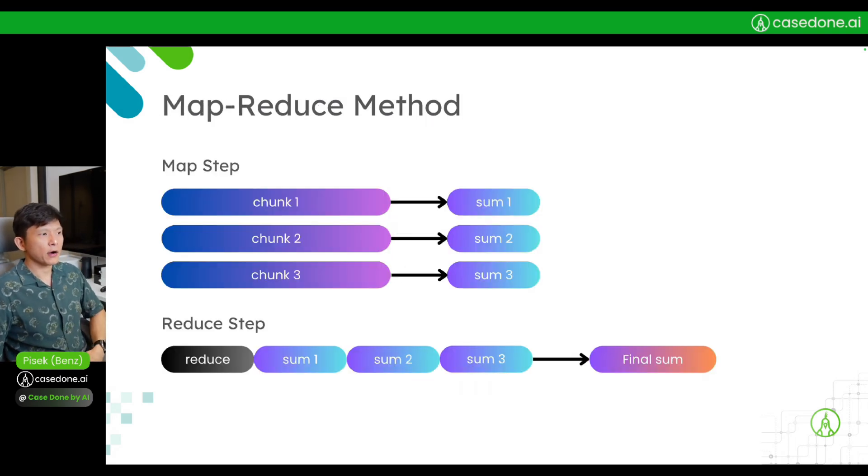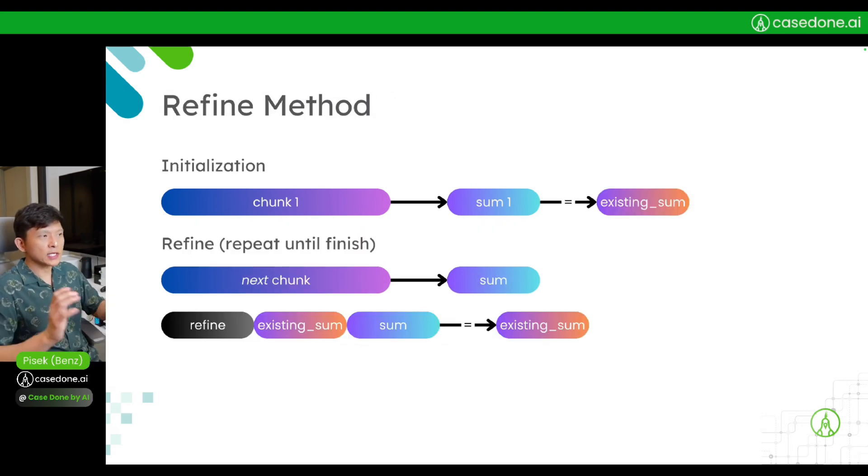Alright, so this is the map-reduce method. The second method is the refine method. What we do here is still break the original long text into chunks, but there are two phases.